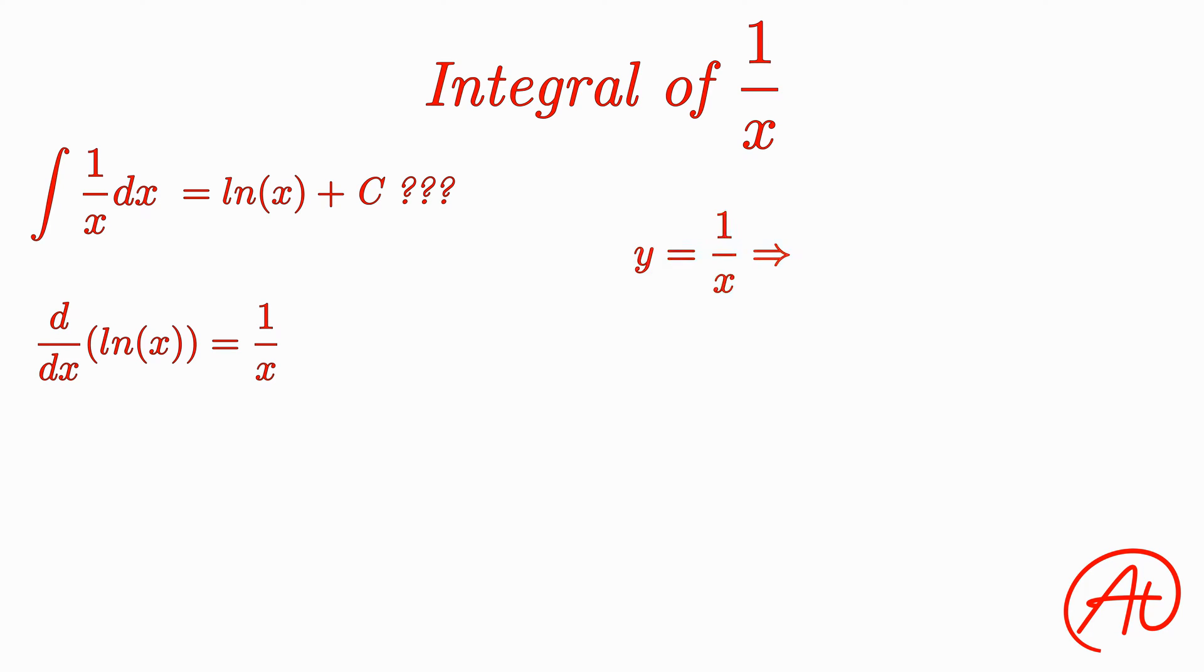First, here's the graph of 1 over x. Next, here's the graph of what we think might be the antiderivative, ln of x. Now, the reason ln of x, as we wrote it, can't be the antiderivative of 1 over x is that they don't have the same domain.